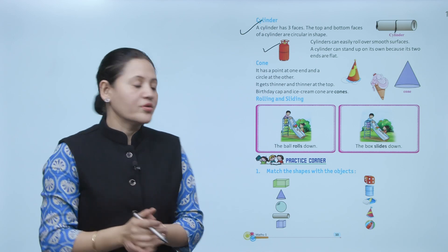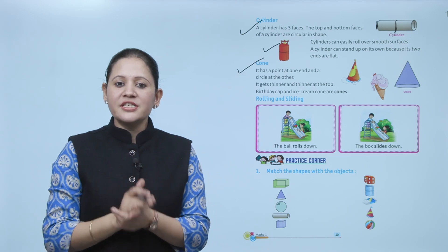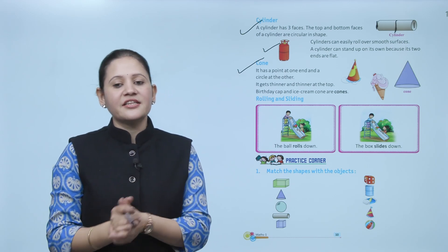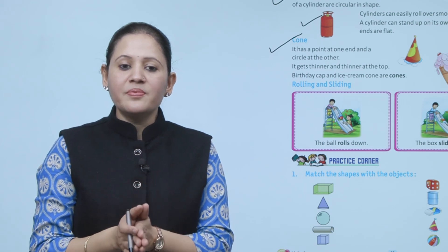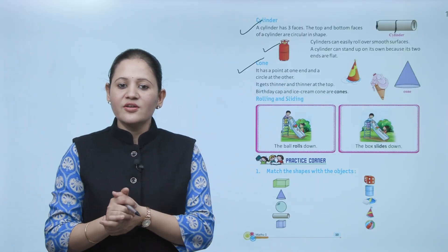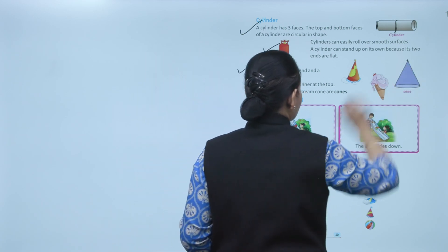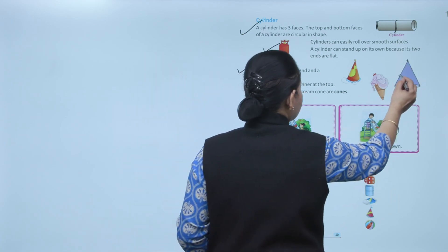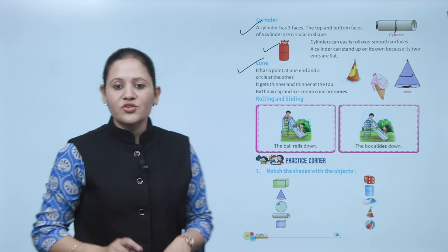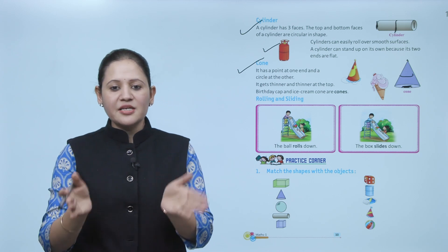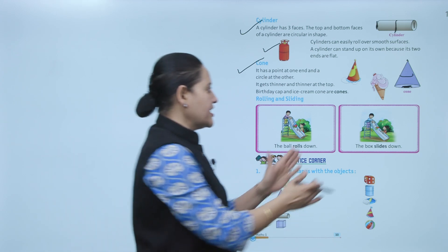Next is cone. It has a point at one end and a circle at the other end, and it gets thinner and thinner at the top. A birthday cap and an ice cream cone are cones. It has one top point, a curved surface, and one flat circular base. It is thicker at the bottom and gets thinner at the top.